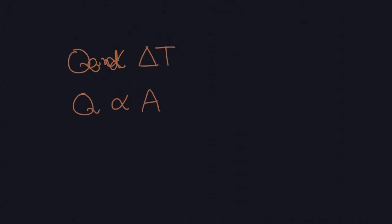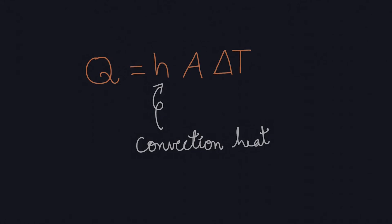So to avail some mathematical benefit, the proportionality has to be removed and a proportionality constant needs to be placed. This constant is called the convection heat transfer coefficient.